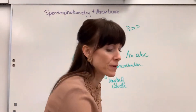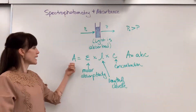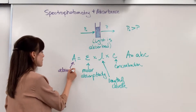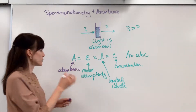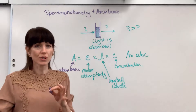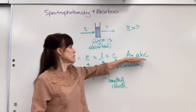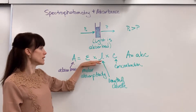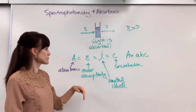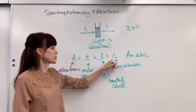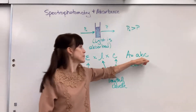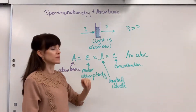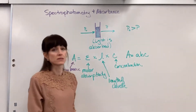Now there's a formula for this. A stands for absorbance. The absorbance equals — I'm giving you two formulas. This is what you'd see on an AP reference sheet, and this is what you'd see in a college classroom: epsilon times length times concentration. This is the same thing written as A, B, C. A is the same as epsilon, B is the same as length, and C is the same as concentration.